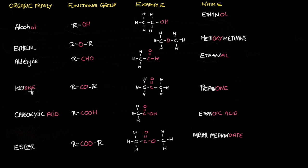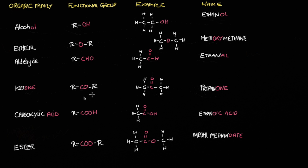Ketones have an O-N-E ending. Their functional group resides in the middle of the molecule, just like an ether, but unlike an ether we've got a C=O, which is known as a carbonyl group — a carbon double-bonded to oxygen. On either side we have an R group. This happens to be called propanone — not propan-1-one, but propanone. In your textbooks you may also see this particular ketone called acetone.